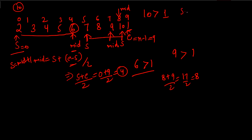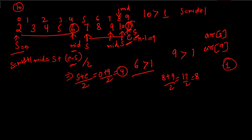Now start = 9 and end = 9, so they are equal. We exit the loop and return arr[start], which is arr[9] = 1 — our answer. Let's verify with a second example: array 3, 4, 5, 1, 2 (indices 0 to 4). Start = 0, end = 4, mid = 2, arr[mid] = 5.